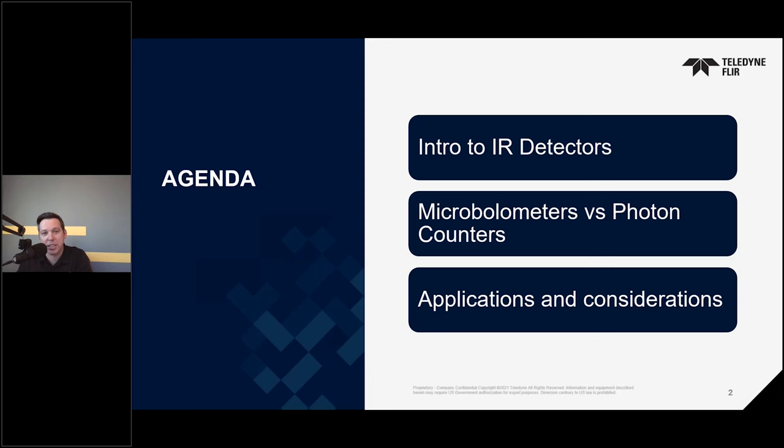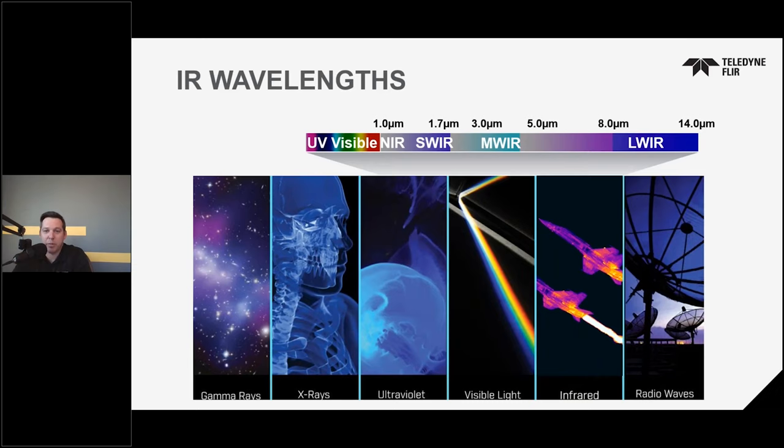What IR products does Teledyne FLIR make — specifically for engineers, scientists, and technicians? Our cameras operate in the infrared spectrum located at wavelengths longer than the visible spectrum. At FLIR, the infrared spectrum begins at around one micron, with the true thermal bands beginning at three micron.